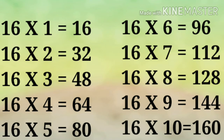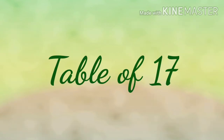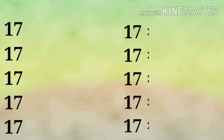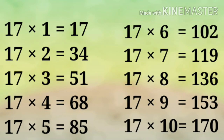16×9 = 144, 16×10 = 160. Table of 17: 17×1 = 17, 17×2 = 34.